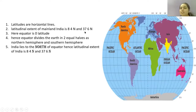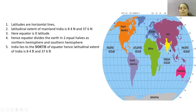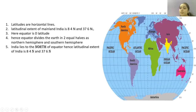These degree and minute values — like 8 degrees 4 minutes — are just used to identify the position of any country. With the help of latitudes and longitudes, you are able to identify the position of any country. It is used for location.